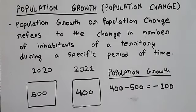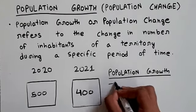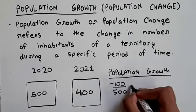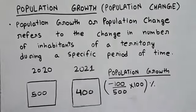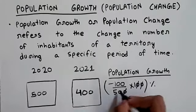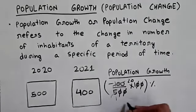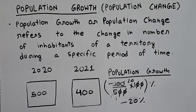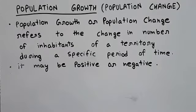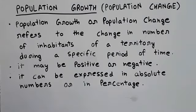यह जो minus 100 है यह answer हमारा absolute numbers में आया है। हम इस population growth को percentage में निकालने की कोशिश करते हैं — यह formula तुम chapter number one of your Indian economy वाली book में पढ़ोगे। सभी calculations करने के बाद answer आता है minus 20%. इससे पता लगता है कि population growth positive भी हो सकती है और negative भी हो सकती है। Population growth को absolute numbers में भी express कर सकते हैं और percentage में भी।